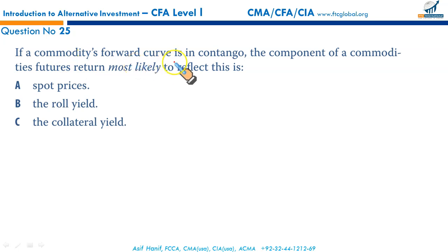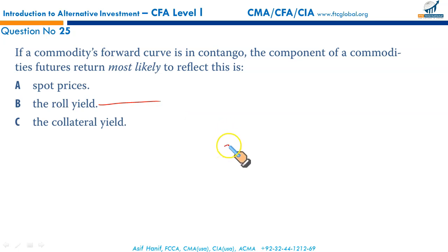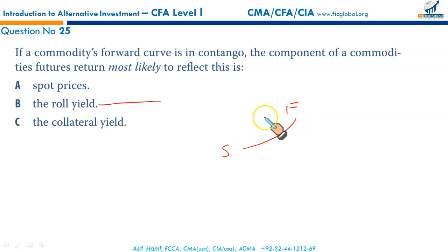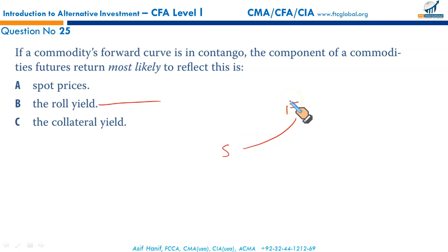If a commodity forward curve is in contango — what is contango? Contango occurs when there is little or no convenience yield. Roll yield refers to the difference between the spot price of a commodity and the price specified by its futures contract — in other words, the futures price is higher than the spot price. The commodity forward curve is upward sloping. This is what we call contango. That makes B the correct option. Collateral yield is simply the return earned on the margin money.